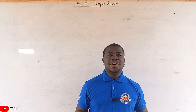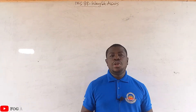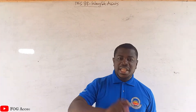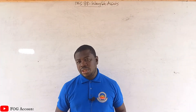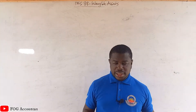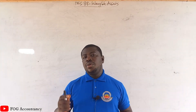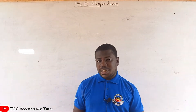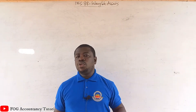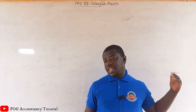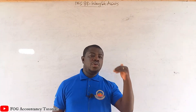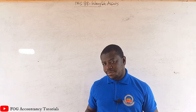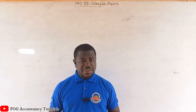Good day. Welcome to another session of Fog Accountancy Tutorials. Today we are going to continue our lesson on intangible assets by starting with the subsequent recognition procedures and then we'll look at the fair value model. In part two of this video the question we solved involved some aspects of subsequent recognition, so I'm not going to talk much about that because that was for the cost model. I'm going to focus mostly on the revaluation model and then we'll look at research and development as well.